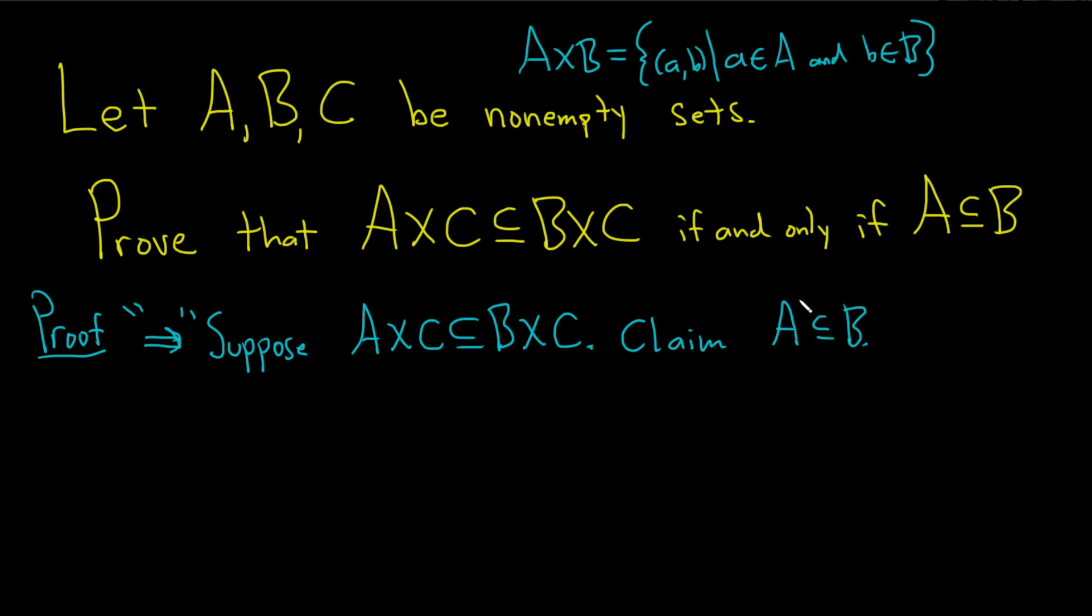Okay so to show A is a subset of B we have to show that every element in A is in B. So the next step is to assume that we have an element in A and then go from there. Take any little a in capital A and now we have to show little a is in B.